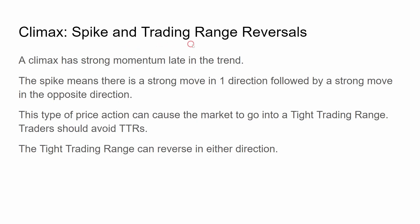Climax, spike, and trading range reversals. A climax has strong momentum late in the trend. The spike means there is a strong move in one direction followed by a strong move in the opposite direction. This type of price action can cause the market to go into a tight trading range. Traders should avoid tight trading ranges, as they can reverse in either direction.